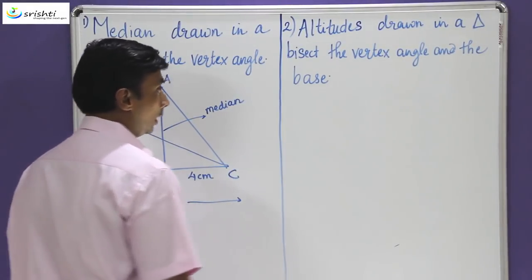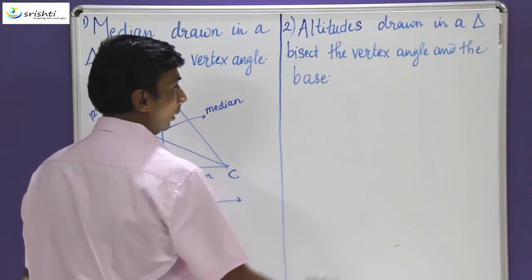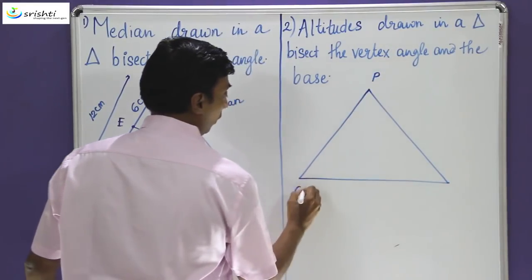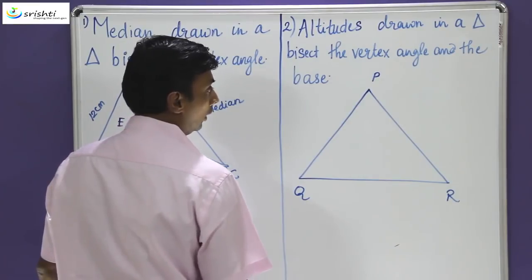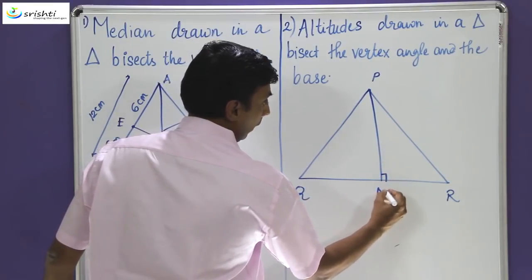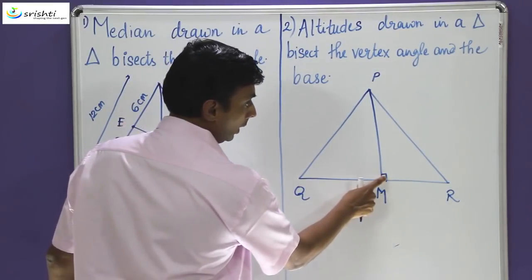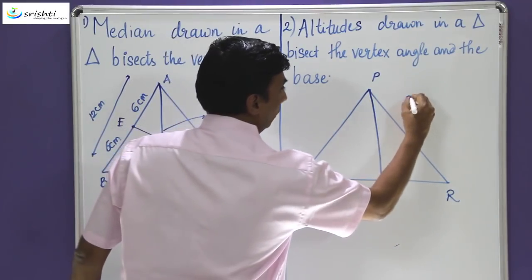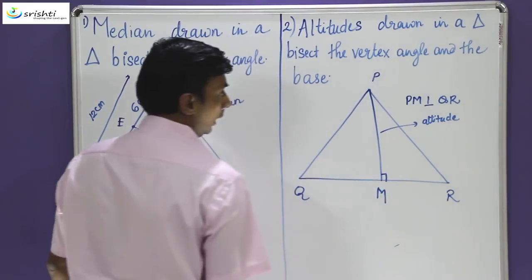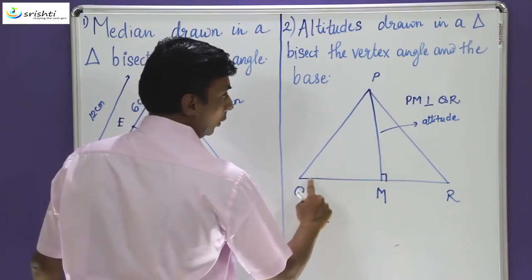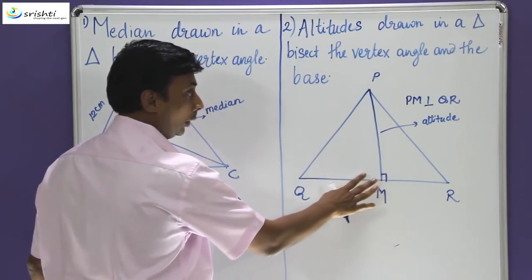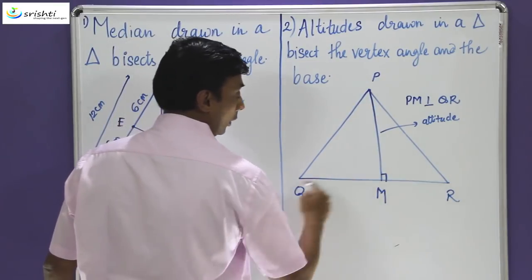Now let's shift to the second misconception. It says altitudes drawn in a triangle bisect the vertex angle and the base. Let's take a triangle PQR and draw an altitude. From vertex P I drop a perpendicular to the base QR, shown by the right angle symbol. Therefore PM is perpendicular to QR and PM is called the altitude. In this case the altitude is only going to be perpendicular to the base. It is not going to divide the base into two equal parts, neither is it going to bisect the vertex angle. Hence the altitude drawn is only perpendicular to the base — it holds no relation to the vertex angle and no relation to dividing the base.